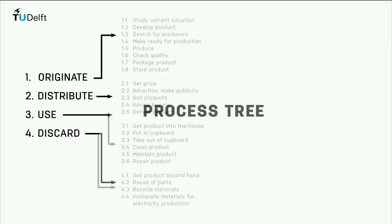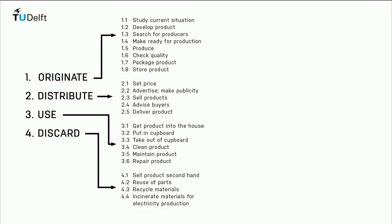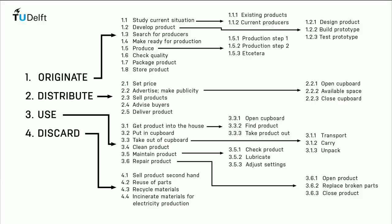In the Delft design guide you can find a generic model that you can modify to suit your project. A process tree always contains the four main processes a product goes through: originate, distribute, use, and discard. All four can be broken down into smaller process steps.